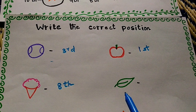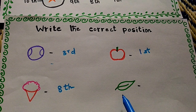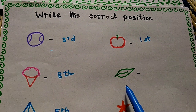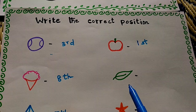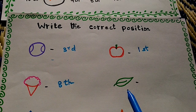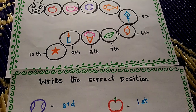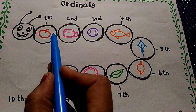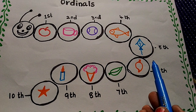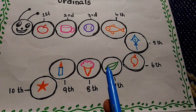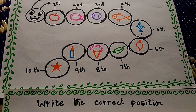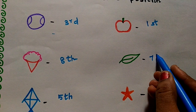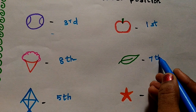Next. What is this? Leaf. Which position can we find the leaf? Which position? Where is leaf? Find out. See here. Where is leaf? Here. Seventh position. Seventh.